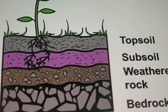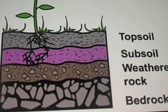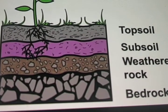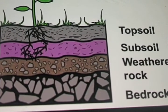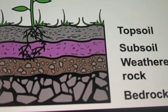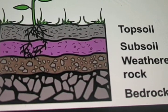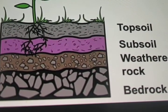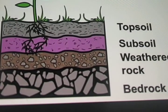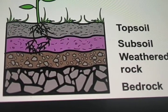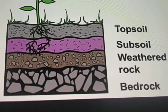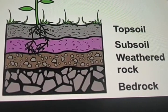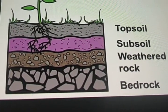The top layer of soil is very fertile and plants grow in it. Below the top soil is the sub-soil, which is hard with mostly small pieces of rock.